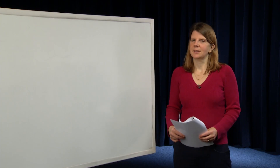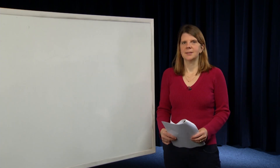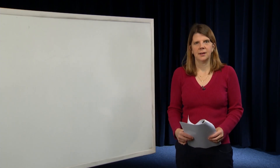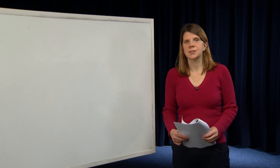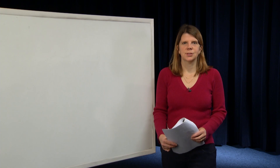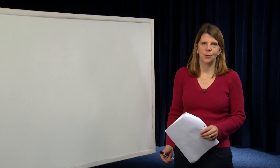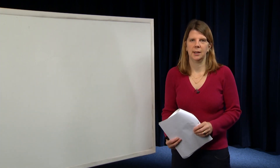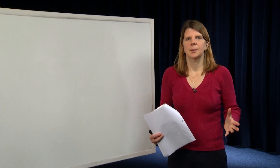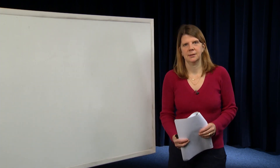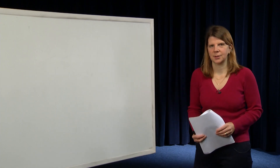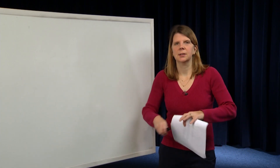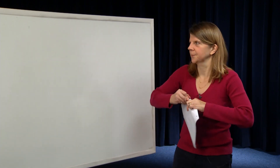Hi everyone, my name is Claire Tomlin and this is module 20 of a series of modules we're developing for the course EECS 221A at Berkeley. I'm a professor in EECS at Berkeley. The topic of this module is Jacobian linearization.